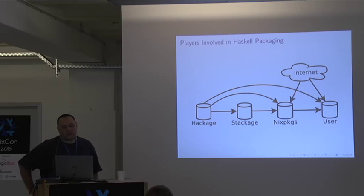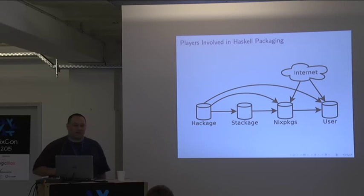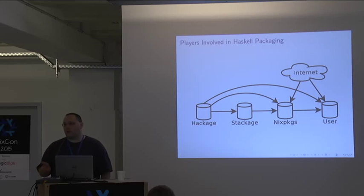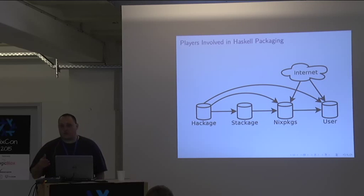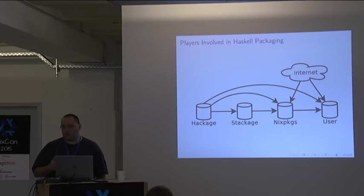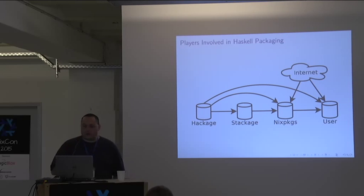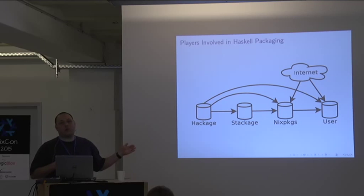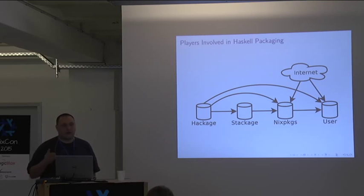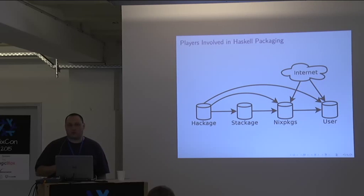Everything deemed worthy of being published to a worldwide audience is typically registered on Hackage. Then there is a separate ecosystem of packages that exist on GitHub or SourceForge where people also publish Haskell packages but don't necessarily register them on Hackage. With Nix packages, you get packages from both — everything registered in the central repository plus other packages pulled in from other sources. For instance, the cabal-to-nix utility, which Haskell users typically use, is not registered on Hackage.